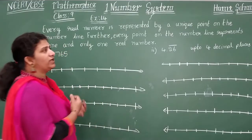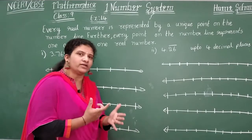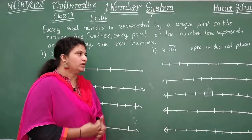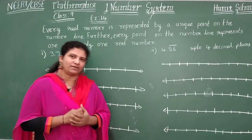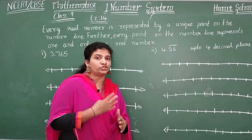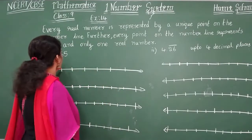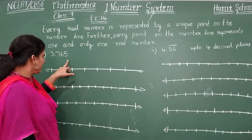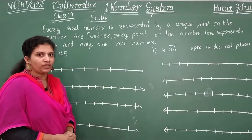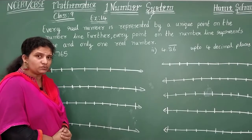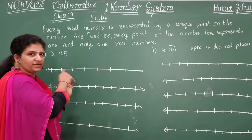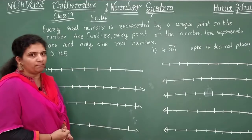In this session we are going to start with exercise 1.4. In this exercise we have only two problems. We need to magnify the number line and represent decimals on it. So how to represent or visualize a decimal? The first problem of exercise 1.4 is 3.765 — magnify the number line and represent this decimal value on a number line.